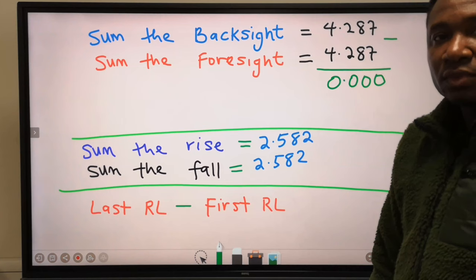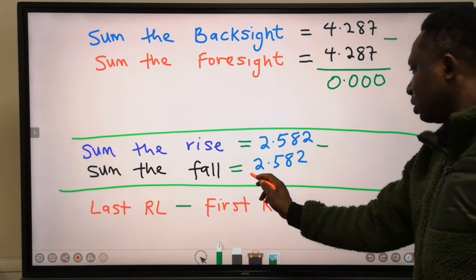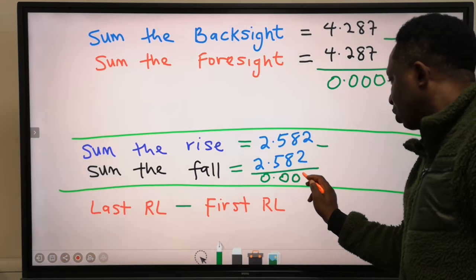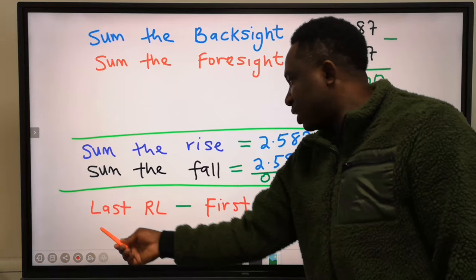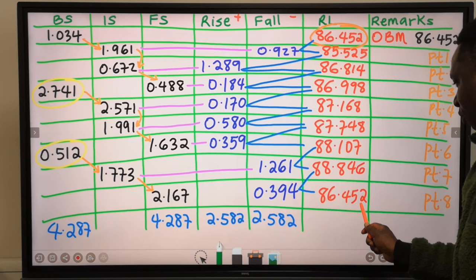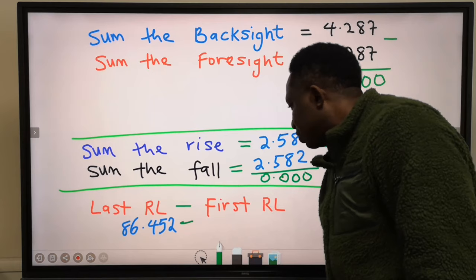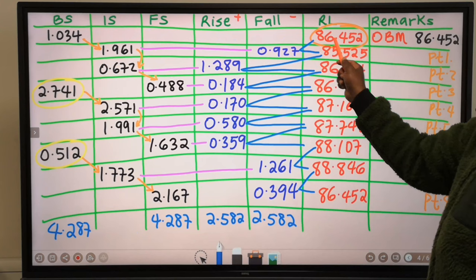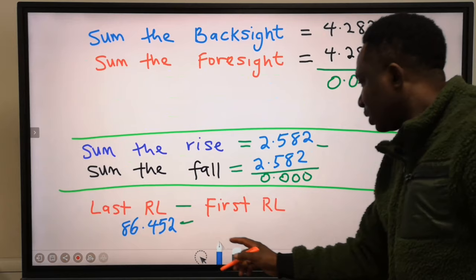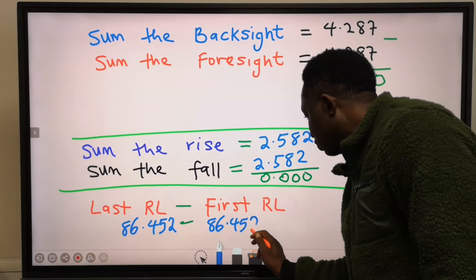Rise minus fall gives 0.000. Next, the last reduced level is 86.452 and the first reduced level is 86.452, so last minus first also gives 0.000. All three check values match, confirming the calculation is correct. In some tabulations this difference may not be exactly zero, but the difference must not be greater than plus or minus 0.05.